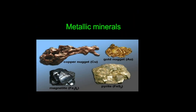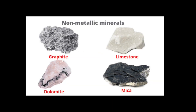Metallic minerals include copper, gold, and magnetite. Non-metallic minerals include graphite, calcium carbonate (CaCO3), dolomite, and mica. These are examples of non-metallic minerals.